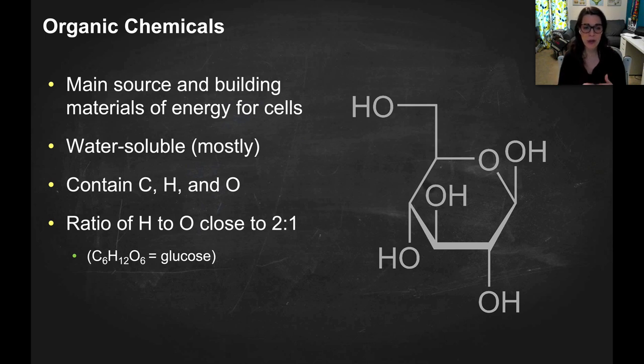And normally, normally the ratio of hydrogen to oxygen is close to two to one. That is the case in glucose, which is the molecule here, but it is not the case for all organic molecules. But if you see one that has carbon and then it has a hydrogen to oxygen ratio of two to one, that's a pretty good sign that we're looking at an organic molecule.